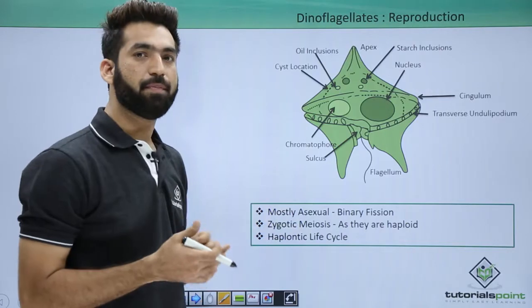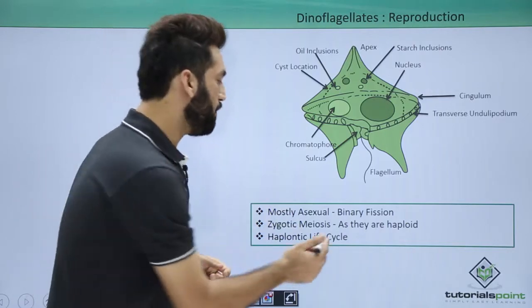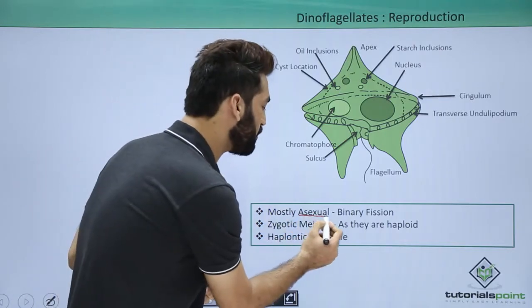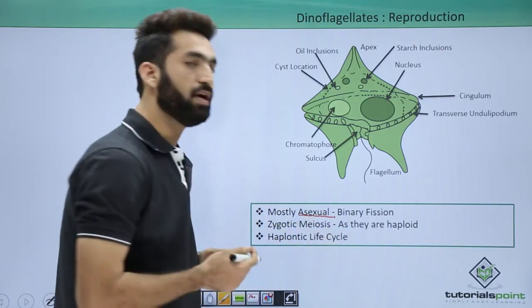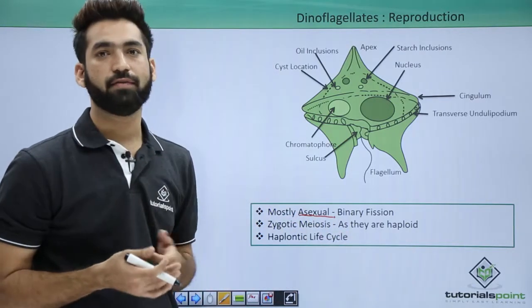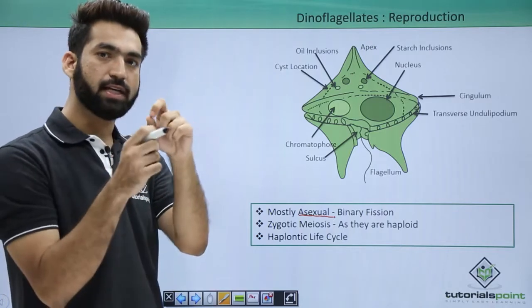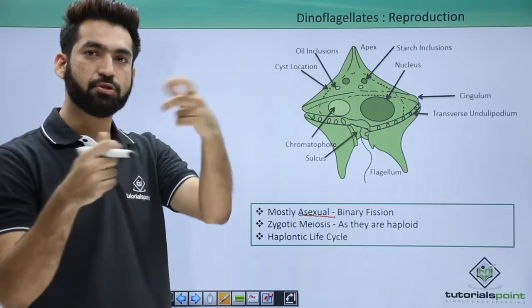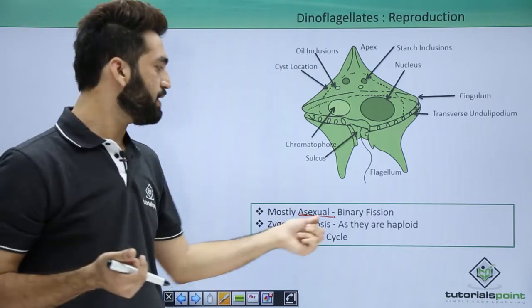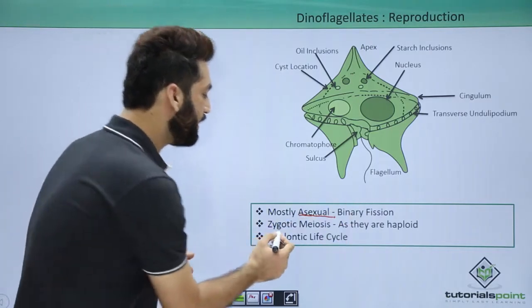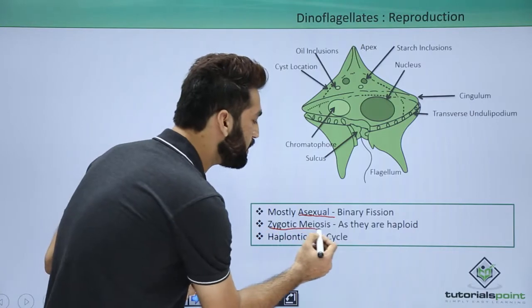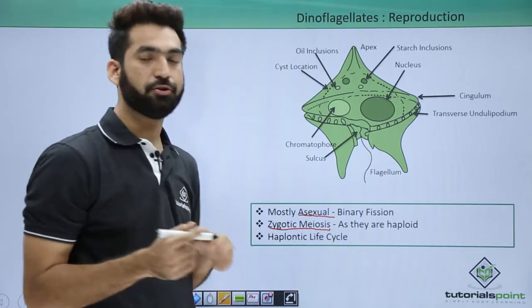Dinoflagellates mostly reproduce by the asexual method of binary fission, where one dinoflagellate divides into two. They also have zygotic meiosis for sexual reproduction.